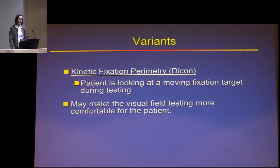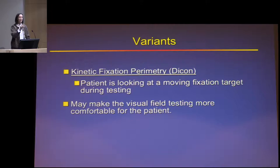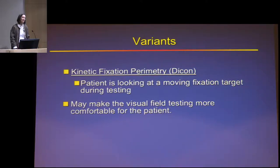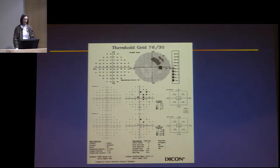I wanted to mention some variants. There's a kinetic fixation perimeter where the fixation target moves around and the testing spots appear around it in the same proportion. I think it's much more comfortable — we get complaints about the dot disappearing, seeing five dots in the center, or hallucinatory experiences. The human eye is not intended to stare into a bright white bowl for more than a few seconds, so this kind of approach might actually catch on.